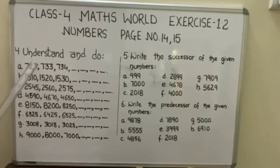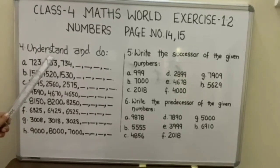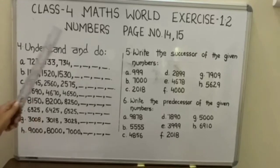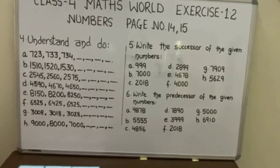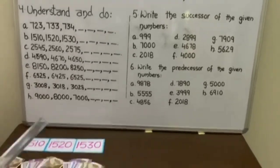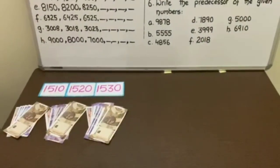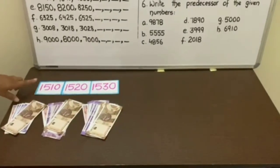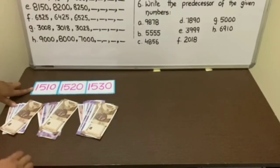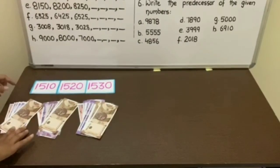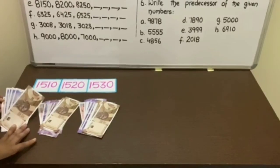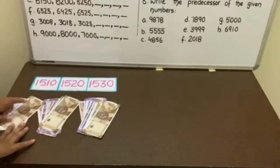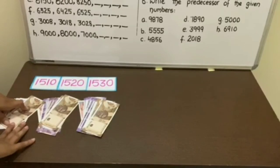Have a look on the board. Question number 4, understand and do. We will solve part B. Have a look on the flashcard and currency notes given. The statement is 1510. Let's count the currency notes: 1 note of 1000, 5 of 100, and 1 of rupee 10.